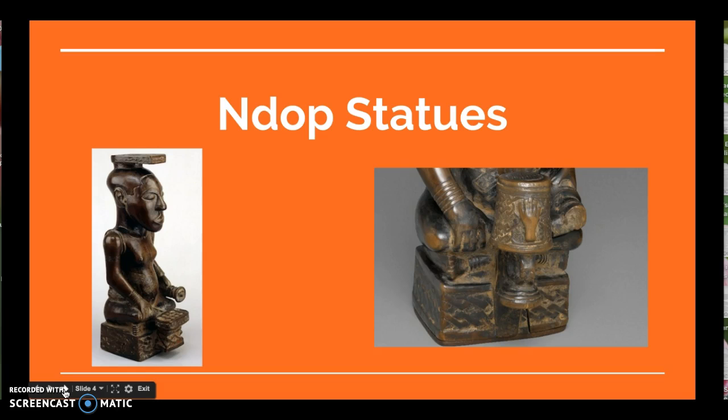Each N'Dop statue ever created featured a unique geometric motif and an emblem, chosen by the leader it was commissioned for. Notice in the right-hand image the motif on the bottom of the statue and the emblem. This is how the statues were linked to those they were meant to honor — it's the only way we know who commissioned the statue, since the artist's name wasn't written down. These patterns can also be seen in other Kuba works, including belts, armbands, bracelets, and headdresses commissioned for other rulers.